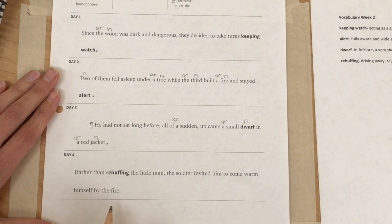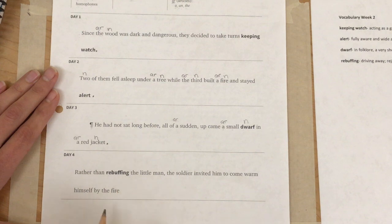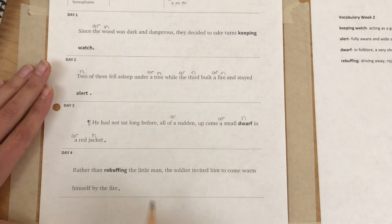Remember, rebuffing means driving him away, telling him he has to leave. He didn't do that. Okay, now this seems like it's probably a sentence, a statement, so we're going to use a period at the end.